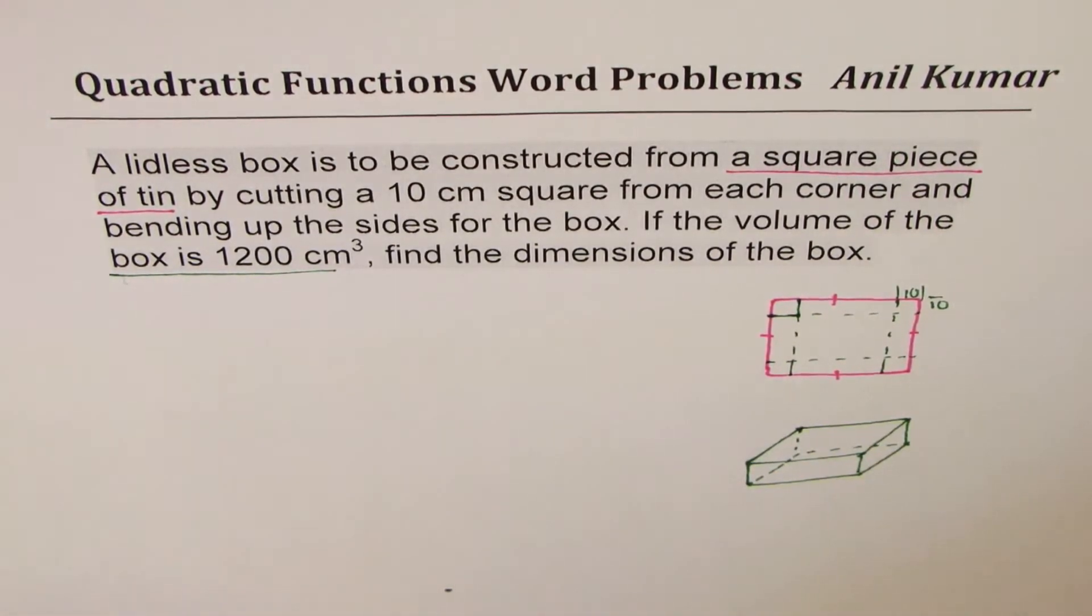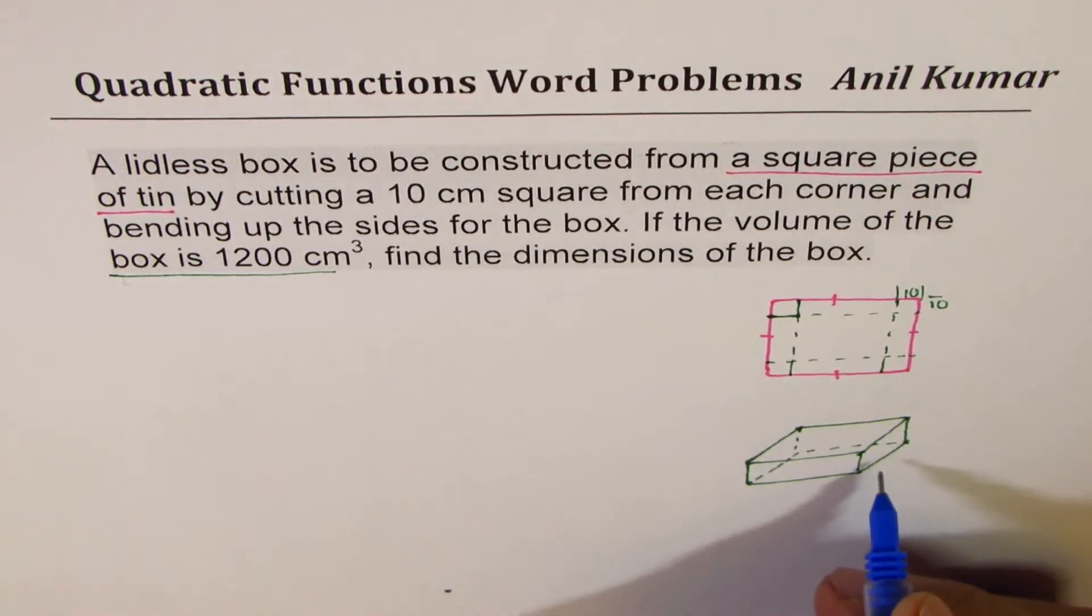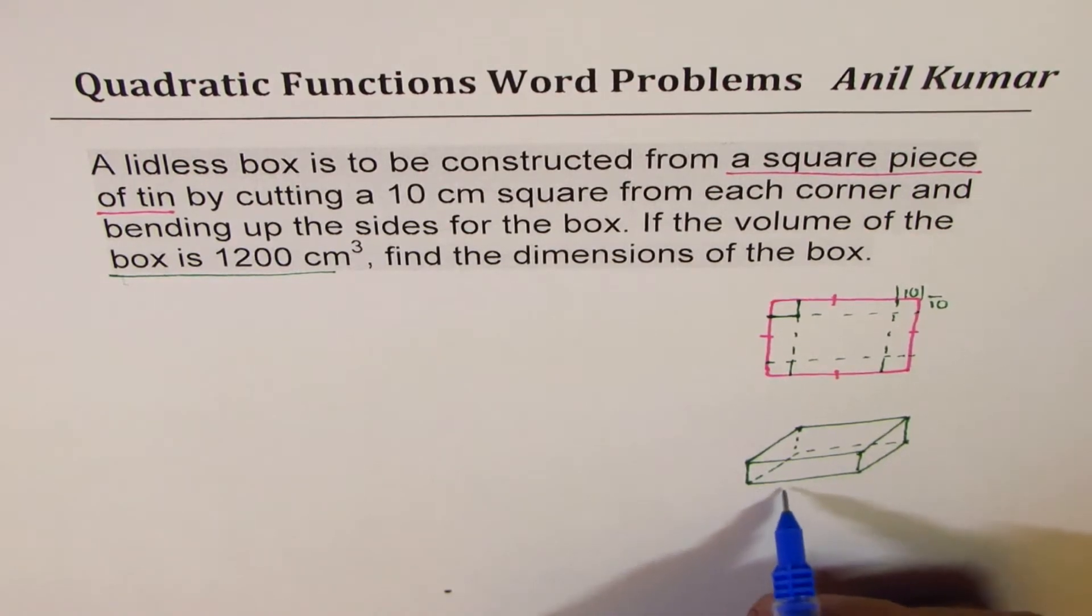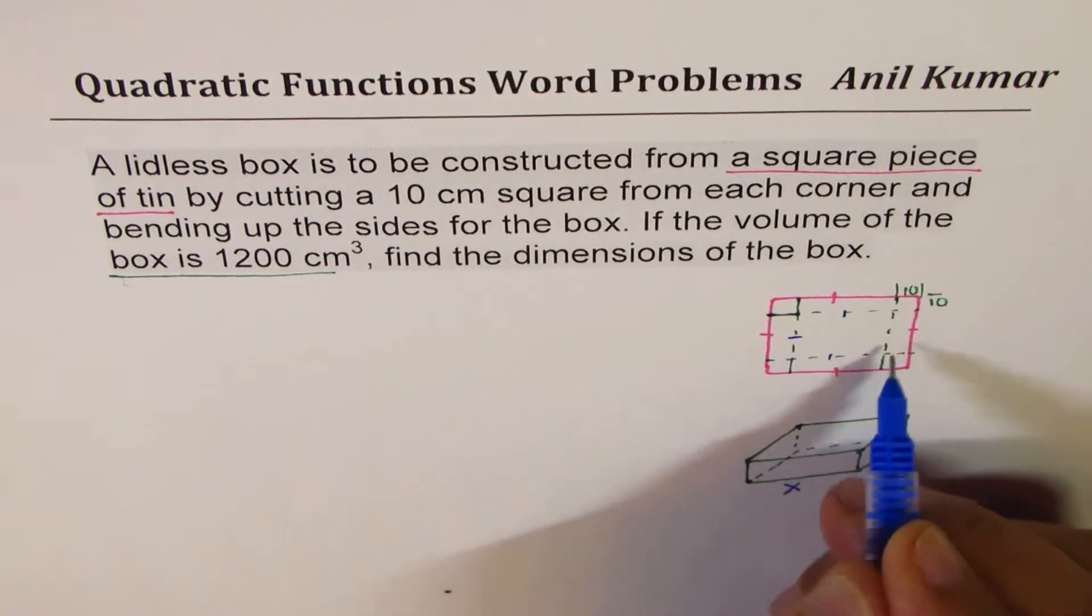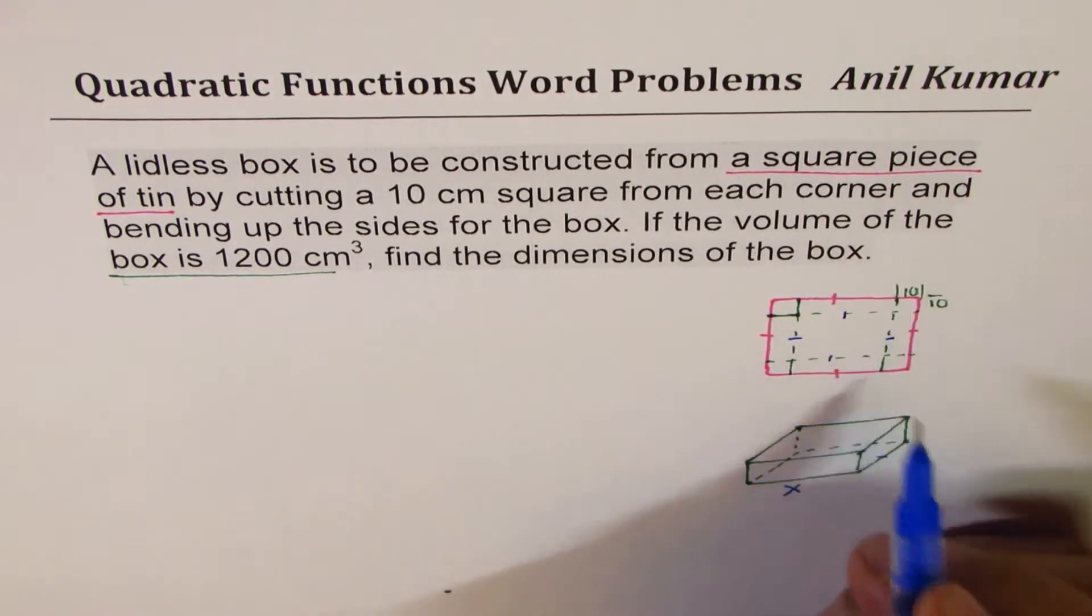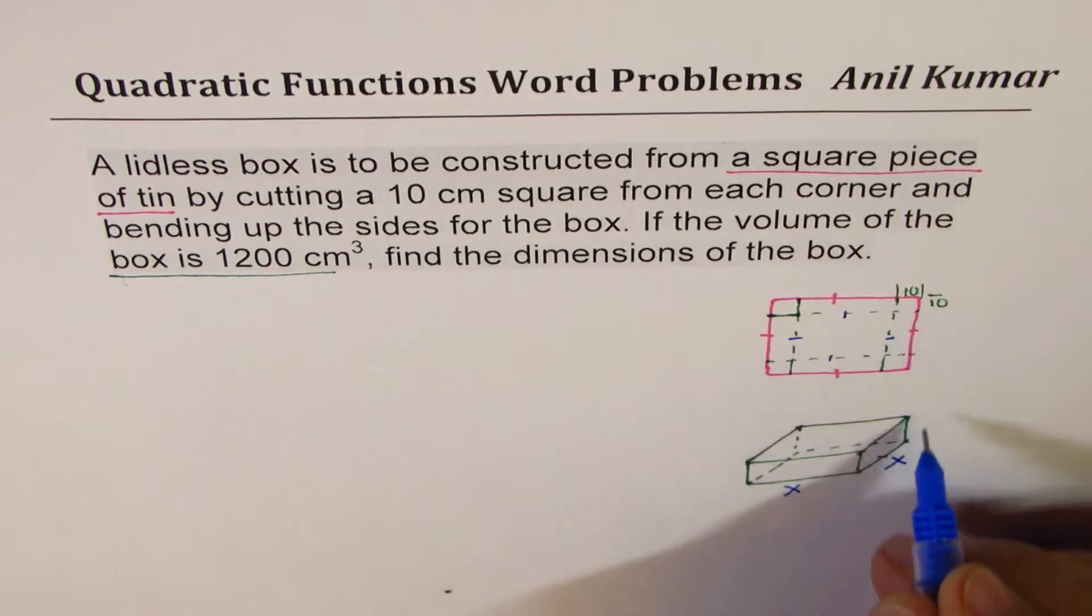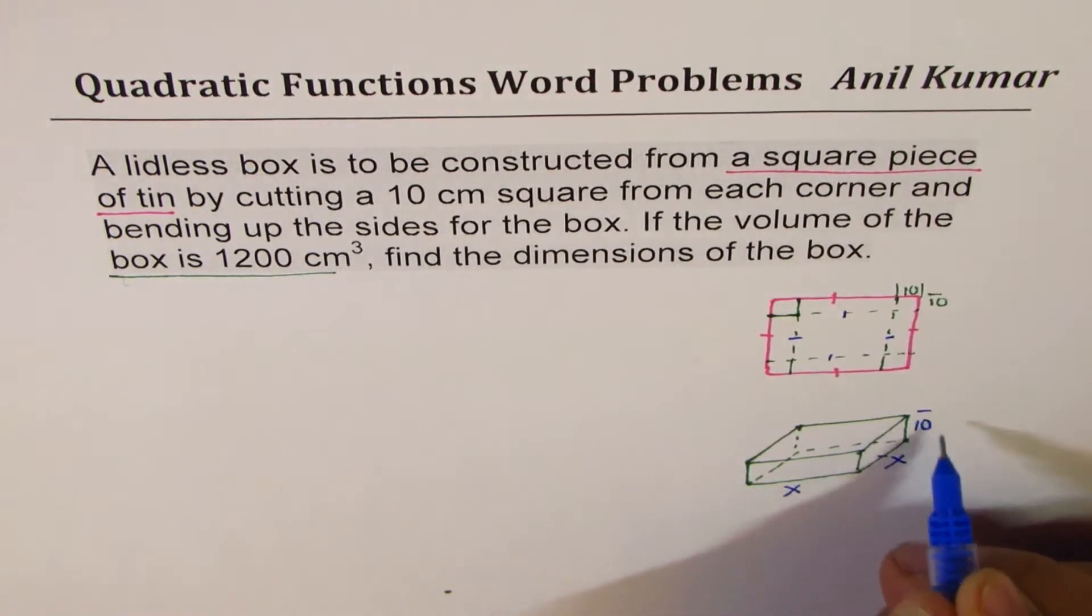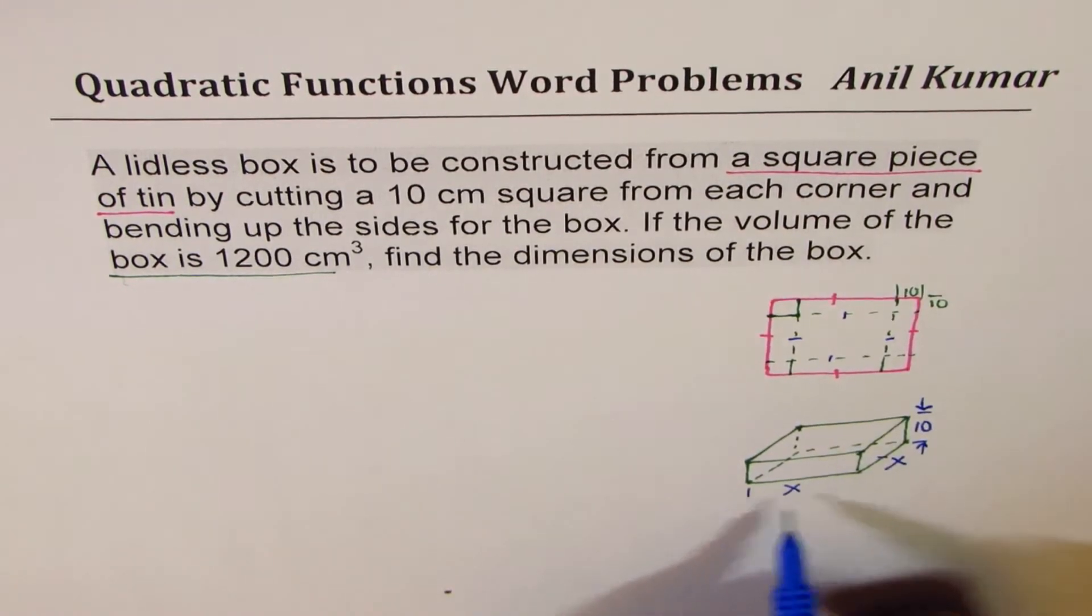So let this be x. What should that be since it is square? All these sides are also equal. We just took 10 from both sides, so that is also x. And that is what we are bending, so that has to be 10. Perfect, so that is what you get as the dimensions.